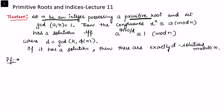Let n be an integer possessing a primitive root. We have discussed earlier that whenever n is either 2, 4, p^k, or twice p^k (where p is an odd prime), only for these integers is it possible to find a primitive root. Considering that n is such an integer, and a is an integer with gcd(a, n) = 1.